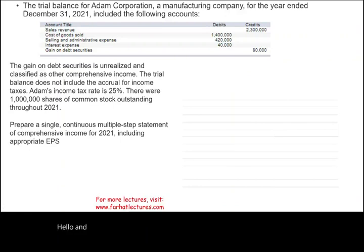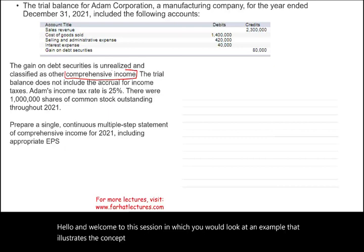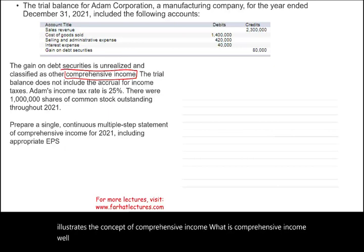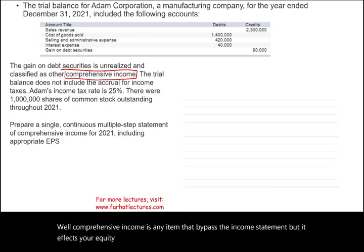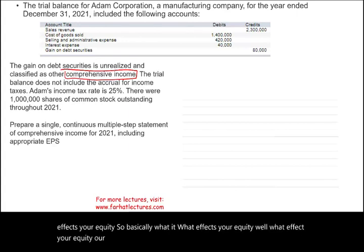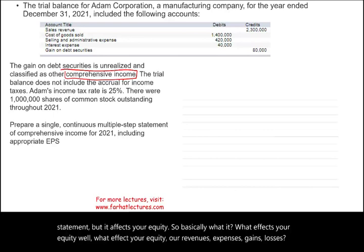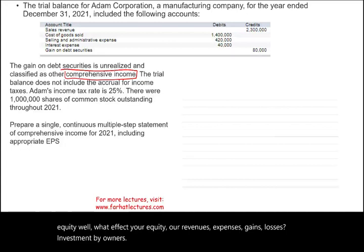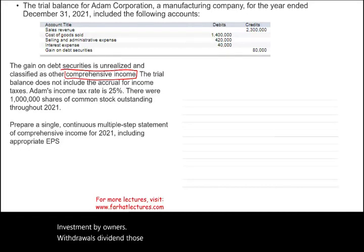Hello and welcome to this session in which we look at an example that illustrates the concept of comprehensive income. Comprehensive income is any item that bypasses the income statement but affects your equity. What affects your equity? Revenues, expenses, gains, losses, investment by owners, withdrawals, dividends — those are the transactions that affect your equity.